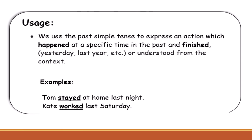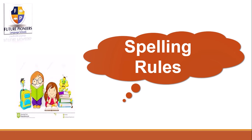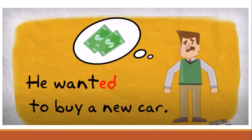For example, Tom stayed at home last night, which means an action happened in the past last night. Kate worked last Saturday — this action happened in the past and finished. Now let's see the spelling rules. How can I form the action in past simple? Past simple verb forms are created by adding '-ed' to the end of the verb. For example: He wanted to buy a new car — this action is in the past and finished.